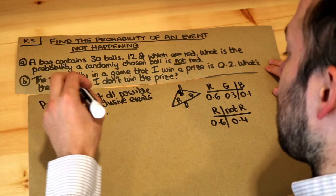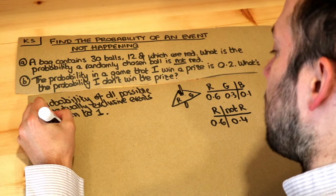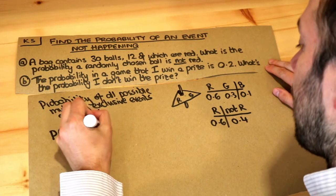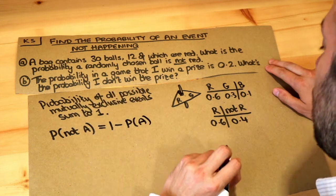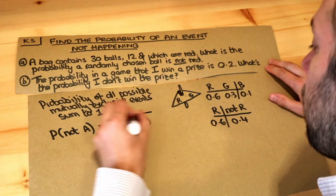So basically, in summary, the probability of something not happening—so if I want to say the probability of not A, whatever A is, A is just something that's happening—would be 1 minus the probability of that happening. So if I want the probability of not red, I would do 1 minus the probability of it being red.